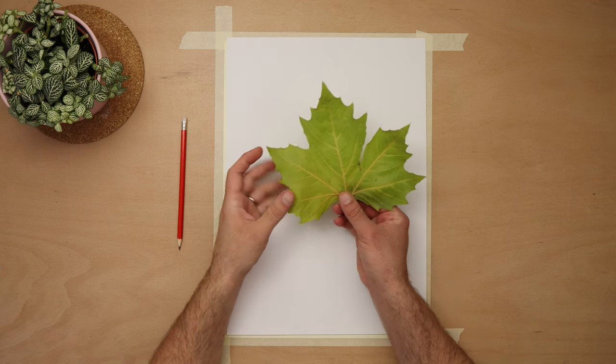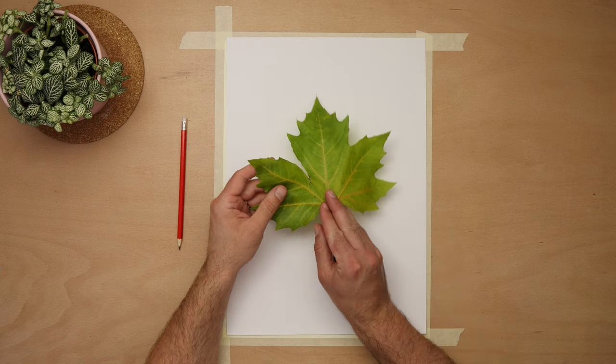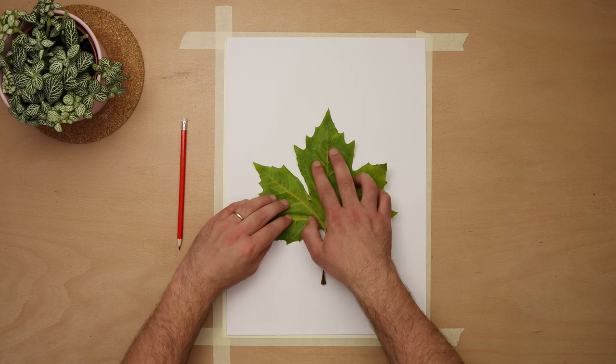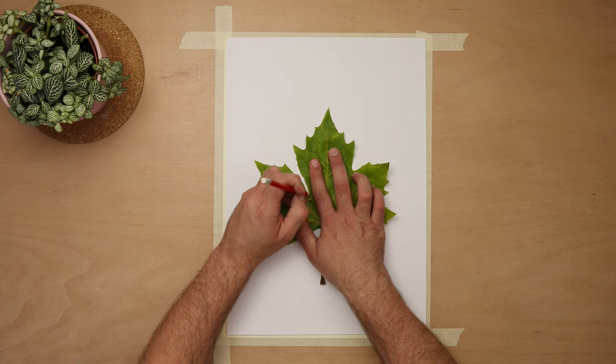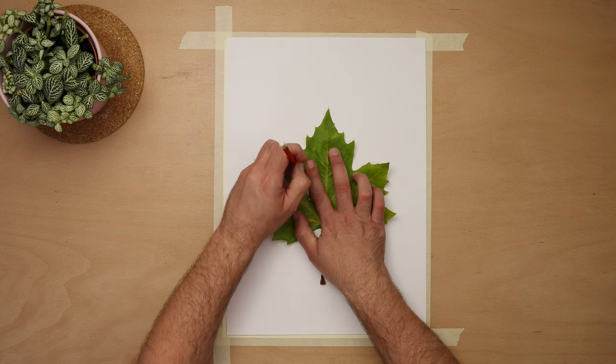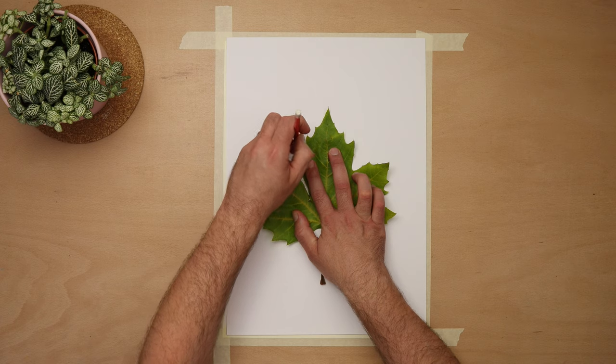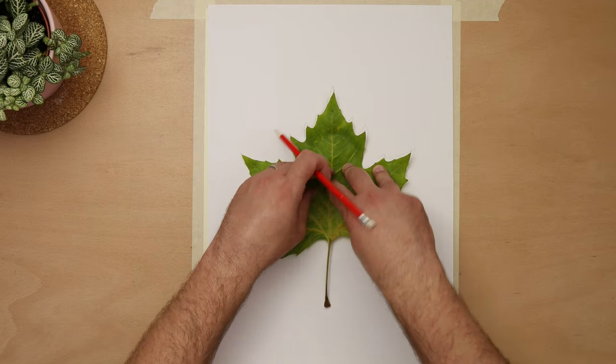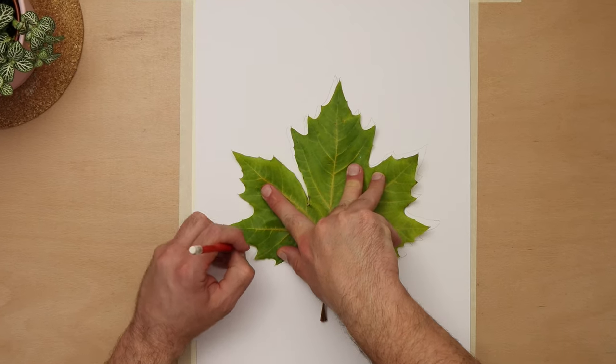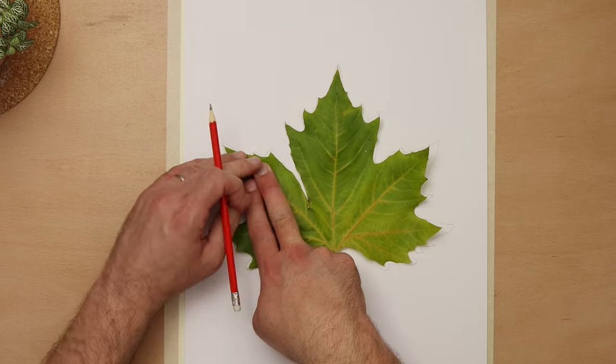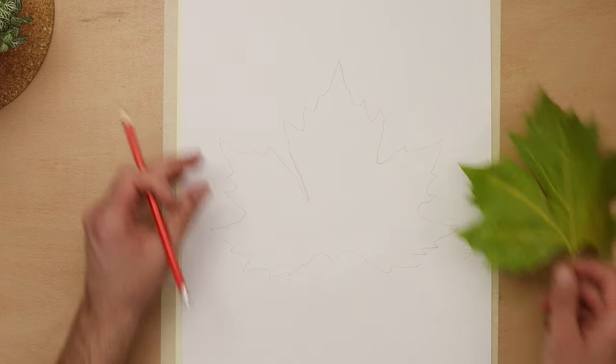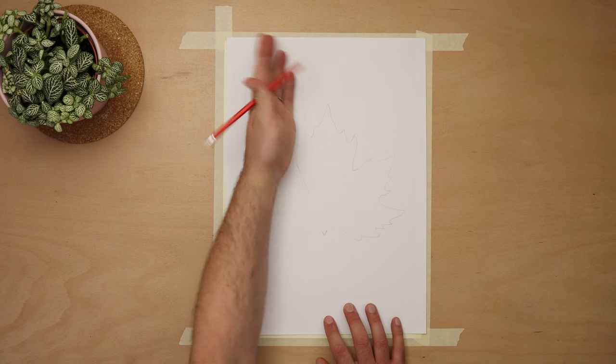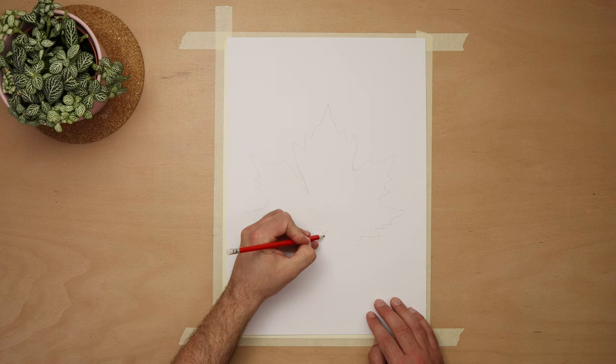Now I'm using just one leaf but you could use smaller ones. Gently hold your leaf down and draw around it. Draw a line that goes from the leaf to the bottom of the page.